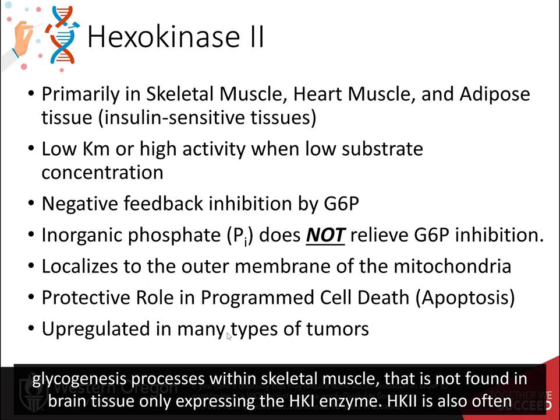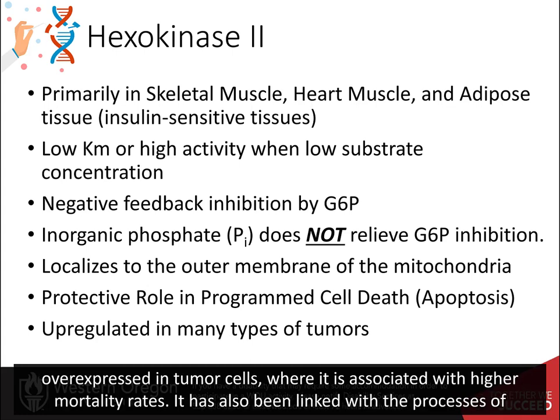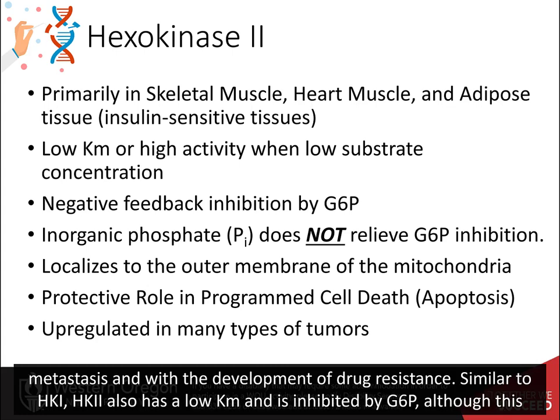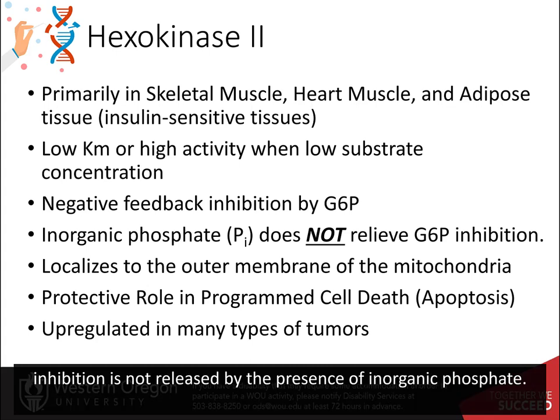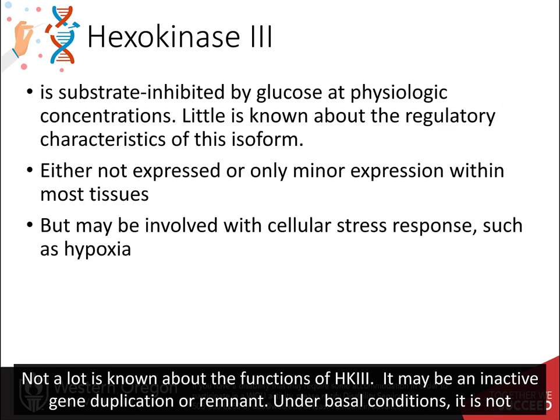HK2 is also often overexpressed in tumor cells, where it is associated with higher mortality rates. It has also been linked with the processes of metastasis and with the development of drug resistance. Similar to HK1, HK2 also has a low Km and is inhibited by glucose 6-phosphate, although this inhibition is not released by the presence of inorganic phosphate.